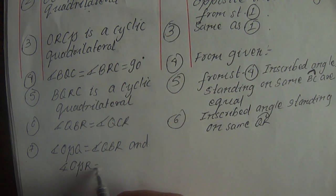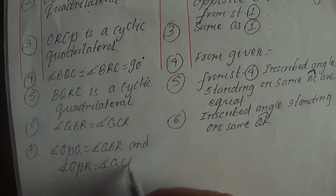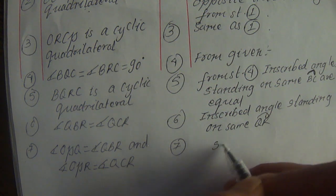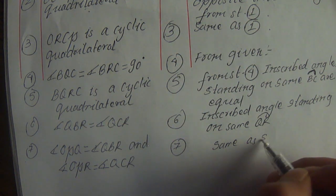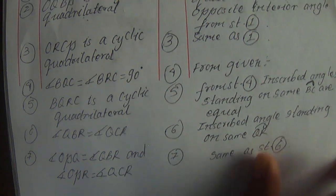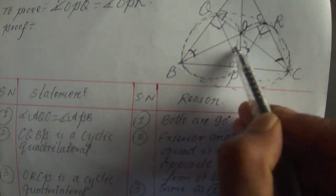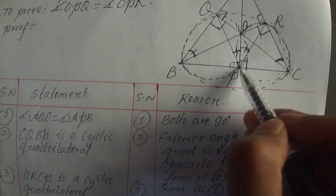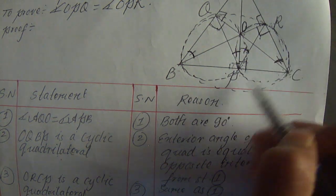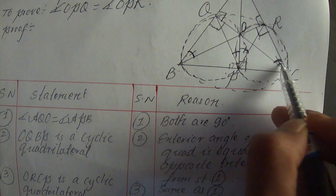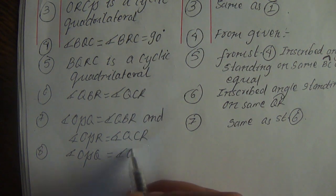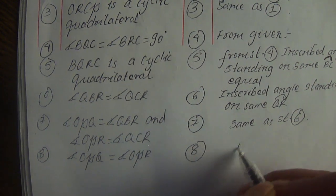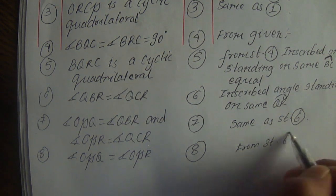Angle ROP is equal to angle QCR — same as statement number 6 — inscribed angle standing on the same arc. So angle OPR equals angle OPQ. We needed to prove angle OPQ equals angle OPR. Angle OPQ is equal to angle OPR — from statements number 6 and 7. Proved.